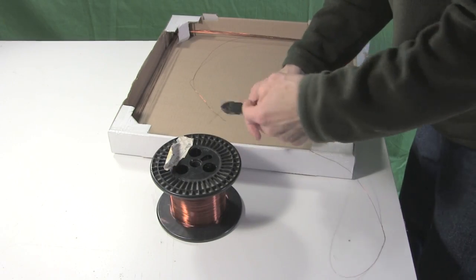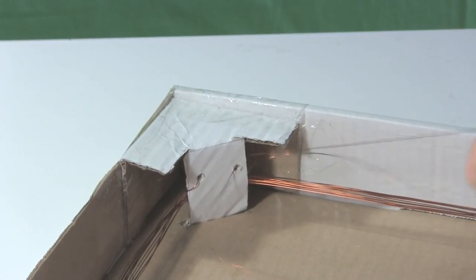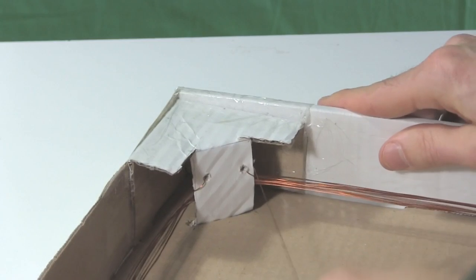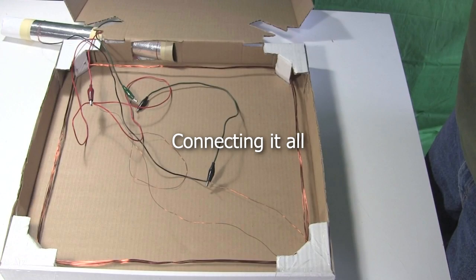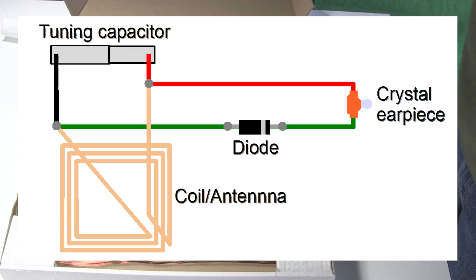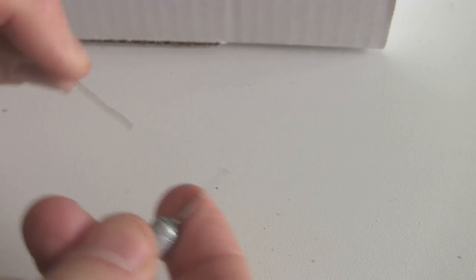Finally I cut the wire, leaving long ends to work with. And then secured the ends in place by putting them through holes in one corner. Next to connect it all together. Here's the wiring diagram but I'll show you each connection as I make it. First remove the insulation from the ends of the coil wires.